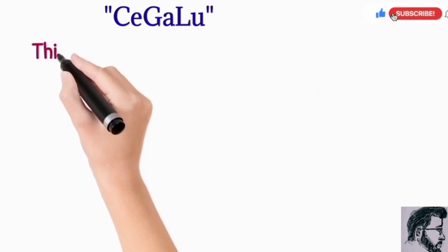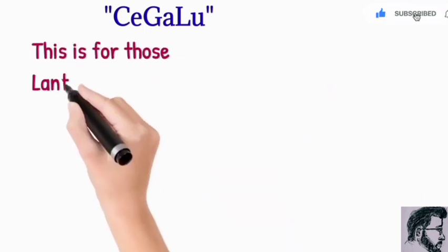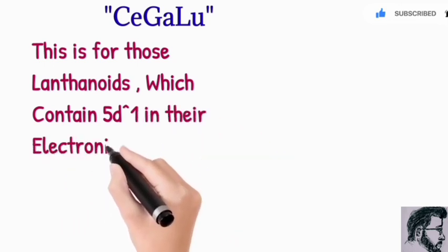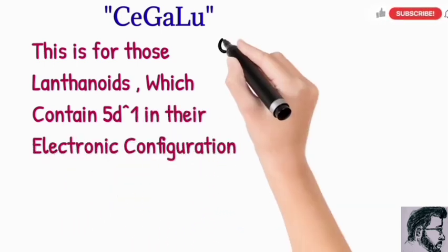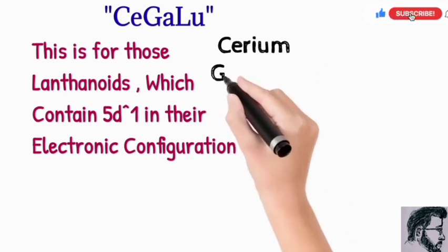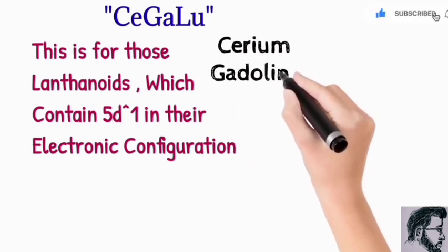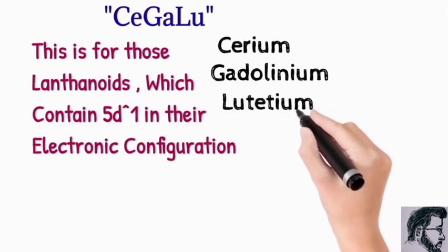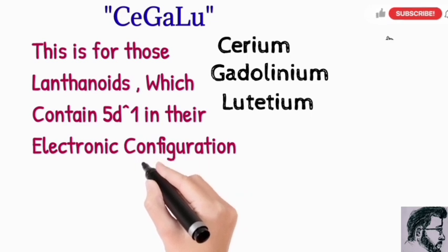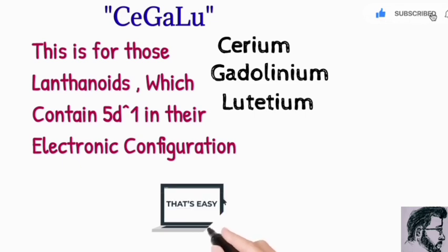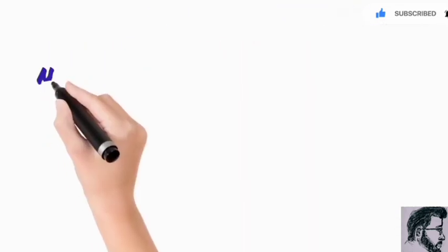The second trick regarding lanthanoids to remember is 'C-ga-lu.' C-ga-lu refers to the three members of the lanthanide series which have a 5d¹ configuration in their outermost shell. So 'C' means cerium, 'ga' means gadolinium, and 'lu' means lutetium. This trick will help you remember those elements of lanthanoids which contain 5d¹ in their outermost electronic configuration.